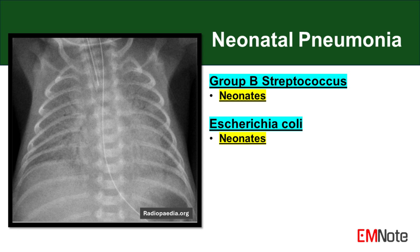Neonatal pneumonia presents unique challenges due to the immature immune system and distinct risk factors in this population. Group B Streptococcus (GBS) and Escherichia coli are common causative agents in neonatal pneumonia.